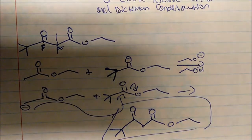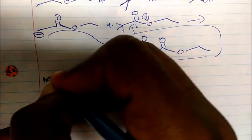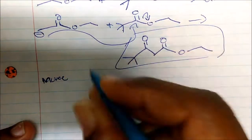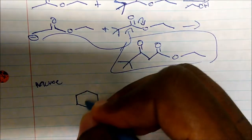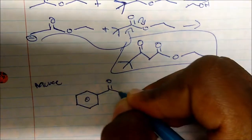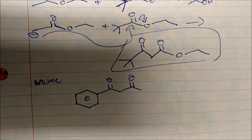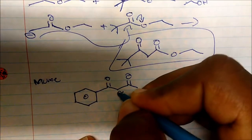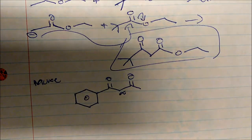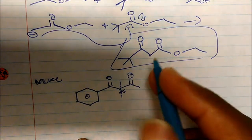So you could kind of see the pattern here. Let's do another one. What if you're given to make this? In this case I'm given a beta-diketone. And if you look, remember the alpha carbon is smack dead right beside the carbonyl. So this is our alpha carbon - you can see that we could split this molecule.